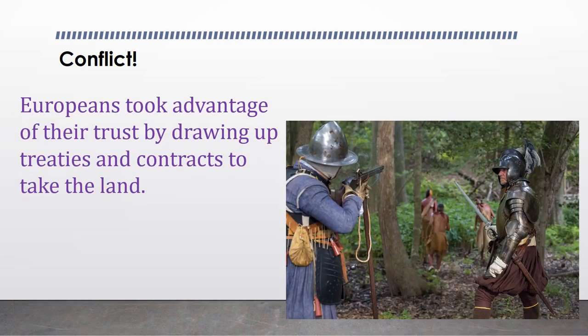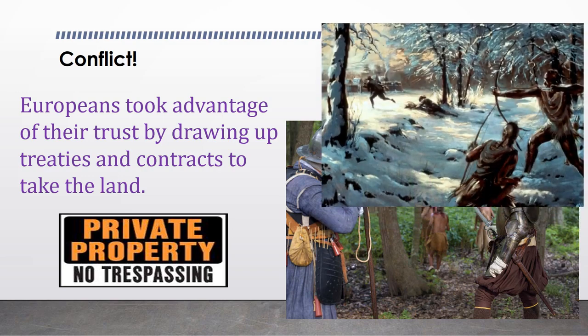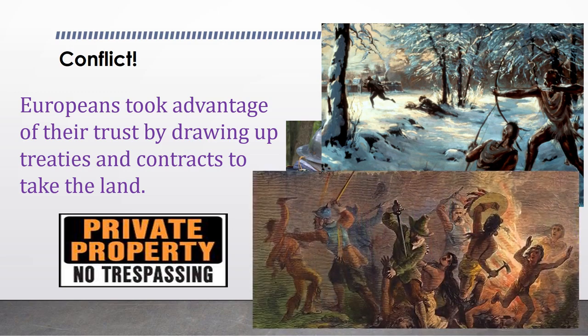Europeans took advantage of their trust by drawing up treaties and contracts to take the land. Because their weapons were more powerful than the bone weapons of the Native Americans, it was easy to scare the Indians off and force them off their land. Other times, the Native Americans took action against the English — they saw the survival of the permanent settlements as a threat to their way of life. Europeans saw these Indian attacks as cruel savagery and blamed the Native Americans for their aggressive behavior, and yet the Europeans often planned attacks of their own, causing confusion and distrust between groups.